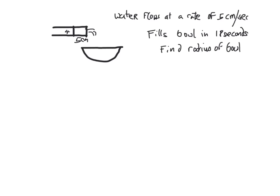So just to give you an idea of the question, the question states that water flows through a pipe at a rate of 5 cm per second and the diameter of the pipe is 4 cm. It fills the bowl in 18 seconds, find the radius of the bowl, so the end goal is to find the radius of the bowl.